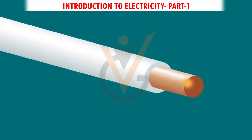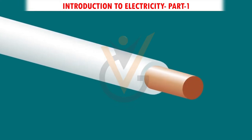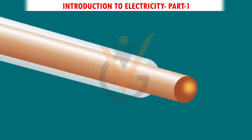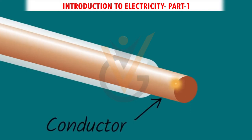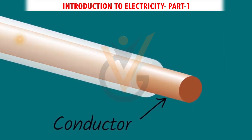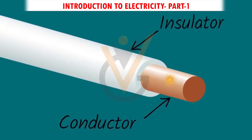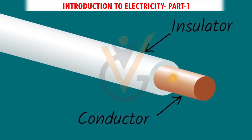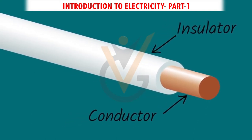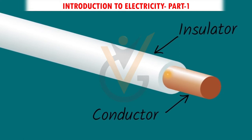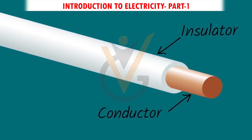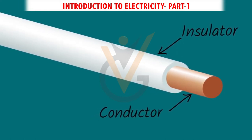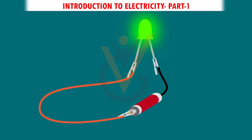Have you ever seen the inside of a wire? The inside is usually made of copper or another conductive metal, while the outside is made of plastic — an insulator. The copper wire helps the electrons flow, while the plastic insulator helps keep the electricity from being wasted and prevents us from being shocked.